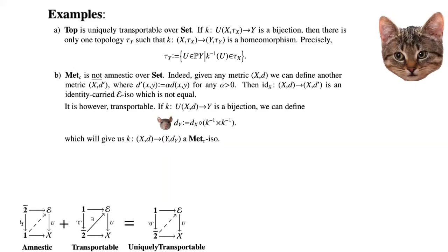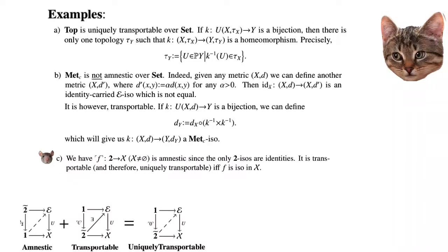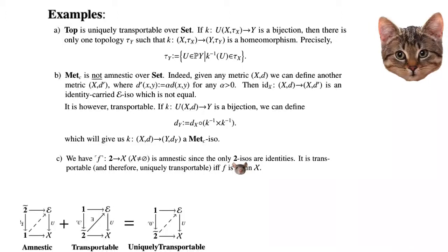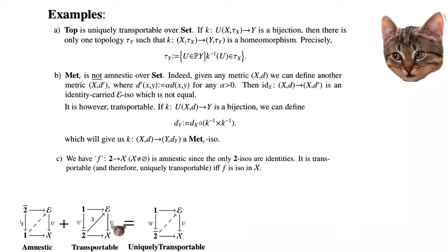For the pathological concrete category of the walking arrow category over a non-empty category X that picks out an arrow f: it is amnestic, since the only isomorphisms in the walking category are the identities. It is transportable, and therefore also uniquely transportable, if and only if f is an isomorphism in X.